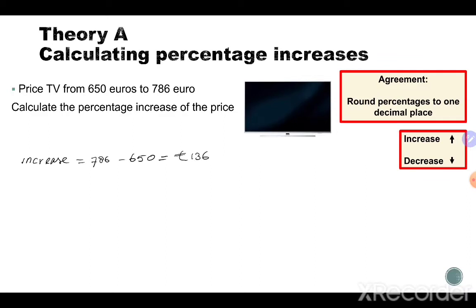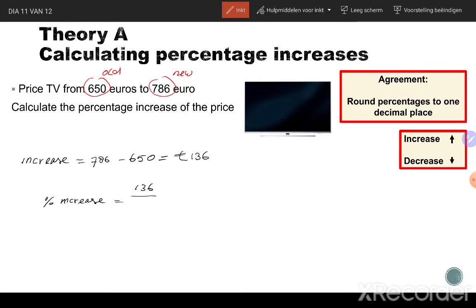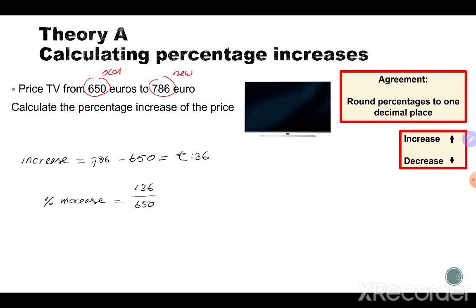If we want to know by what percentage it increased — the percentage increase — we need to divide the 136 by the old price, the price where we start with. The price goes from 650 euros to 786 euros, so 650 is the old price. We always compare with the old price: 136 divided by 650, multiplied by 100. That gives 20.9 percent, because we need to round to one decimal place.